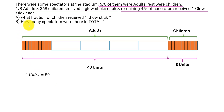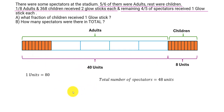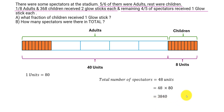Now coming back to the second question: how many spectators were there in total? Spectators total 48 units. So the total number of spectators is 48 times 80, which gives us 3840 spectators. That is the total number of spectators.